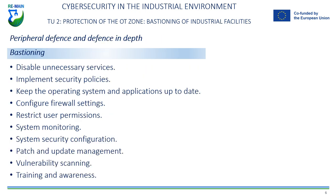Hardening is a security practice that aims to reduce the attack surface of a system or network by limiting the services and functionalities available to users and applications. By limiting the number of entry and exit points, the possibility that an attacker can exploit a vulnerability to access sensitive information or resources is reduced.